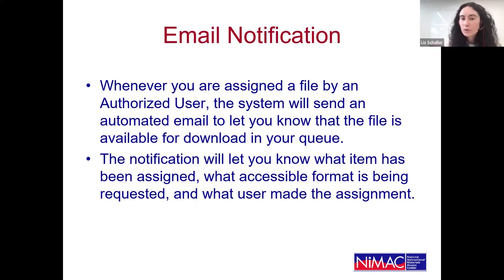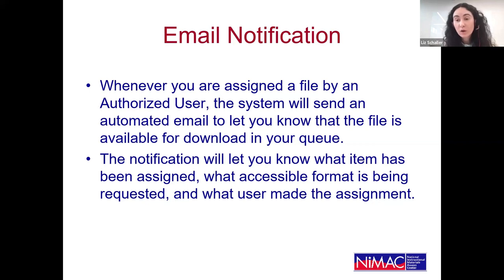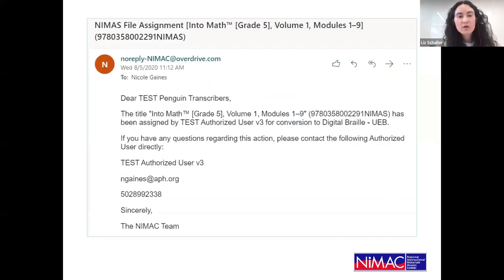I will show you this in the system later. Just to note: the accessible format being requested — that functionality only allows individuals to request one format, but it is by no means restricting you to produce just that format. For instance, if they request digital UEB, that doesn't mean you can't also produce hard copy Braille. On screen now is a screenshot of what that email looks like, including the title and ISBN information, who assigned you the file, and the requested format.